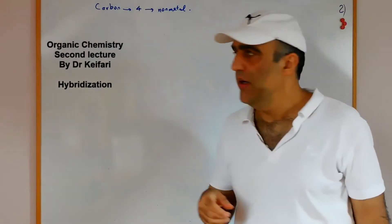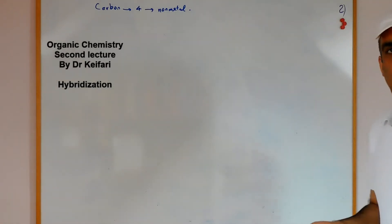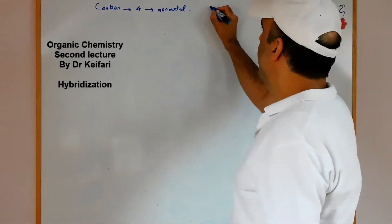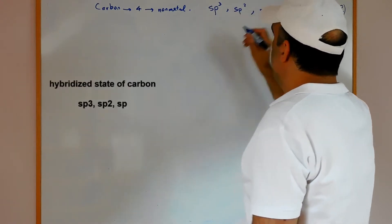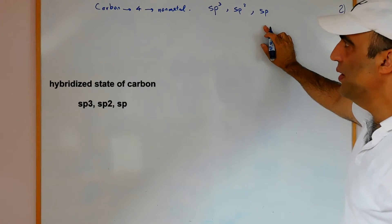Carbon is in group 4. Carbon has three hybrid states which are sp3, sp2, and sp. They are very important in organic chemistry.